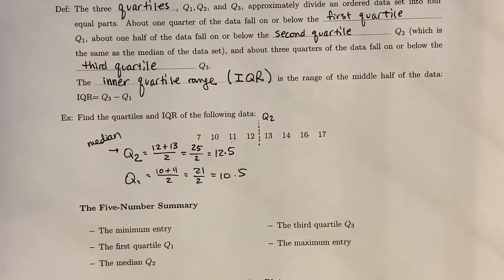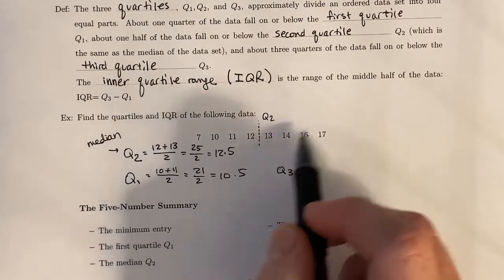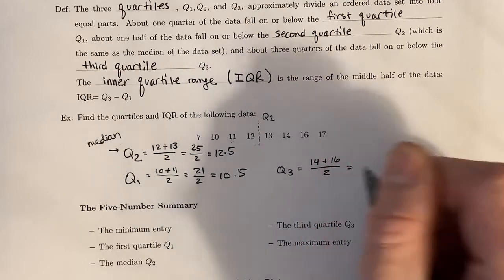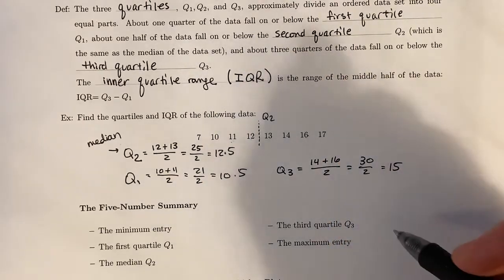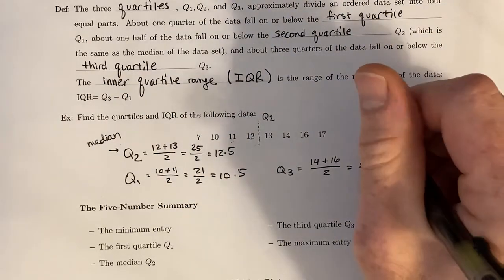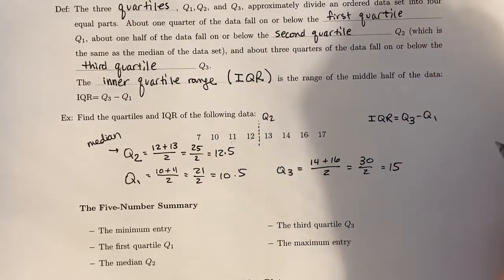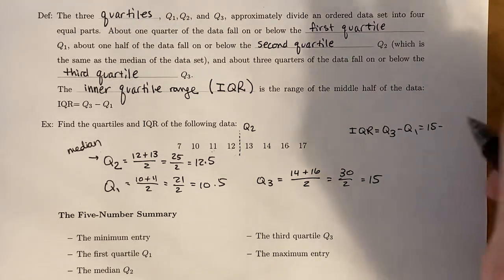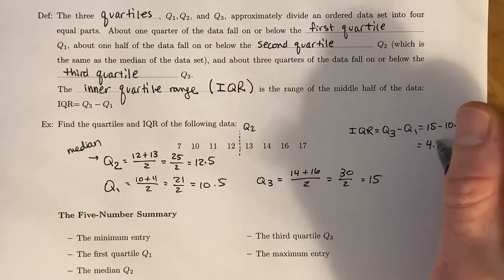For the third quartile we do essentially the same thing. We come from either side till we meet in the middle—we had a 14 and a 16, and we have to take the average of those two. So that's 30 divided by 2, which gives us 15. Our third quartile is at 15. Now to find the IQR, we take Q₃ minus Q₁. Q₃ was 15, Q₁ was 10.5, and that gives us 4.5 as an IQR.